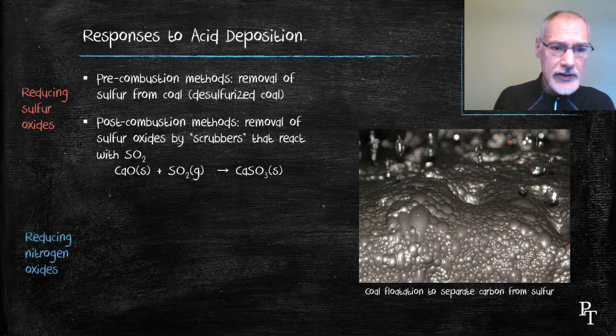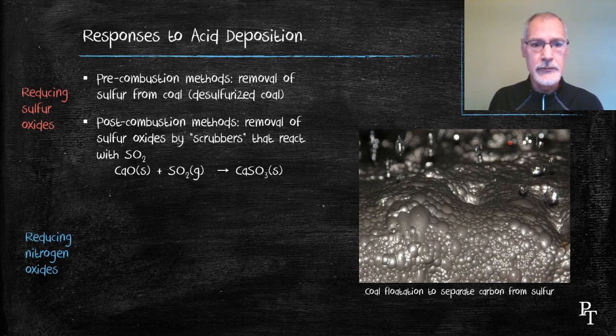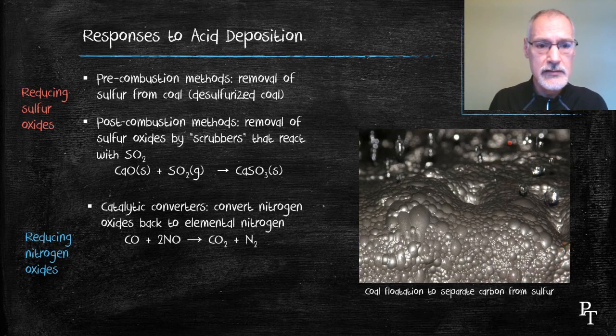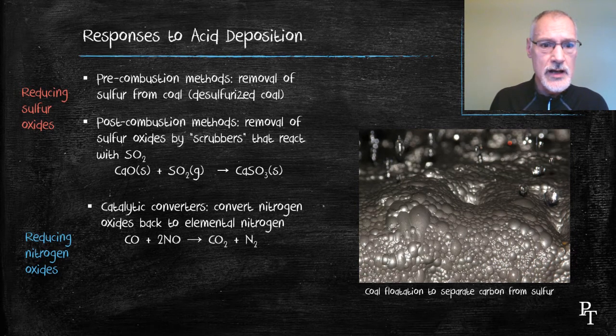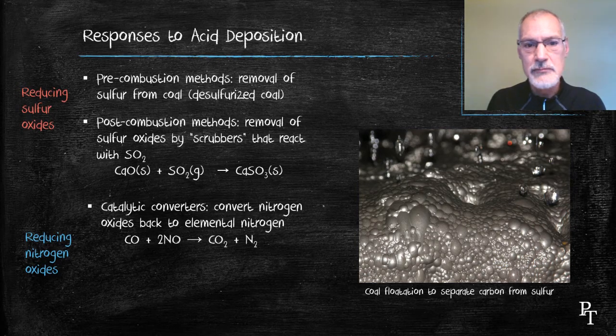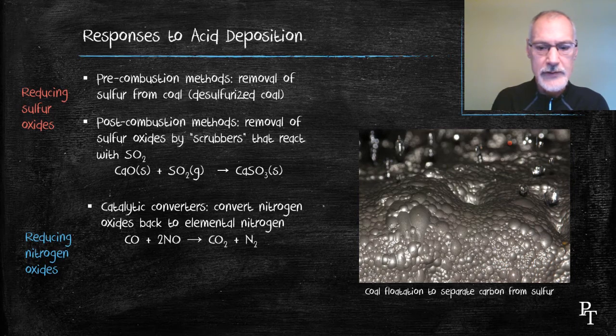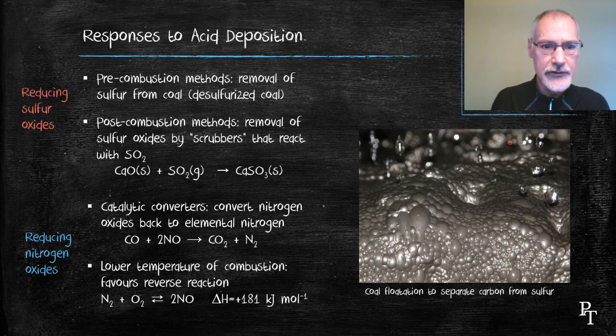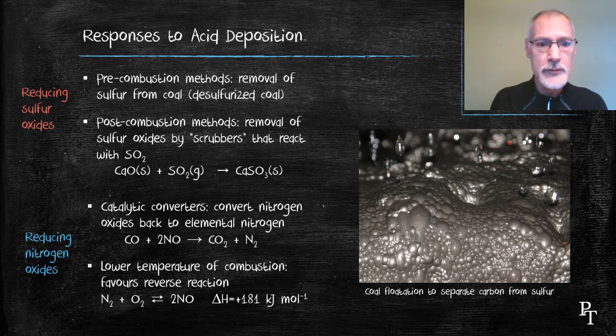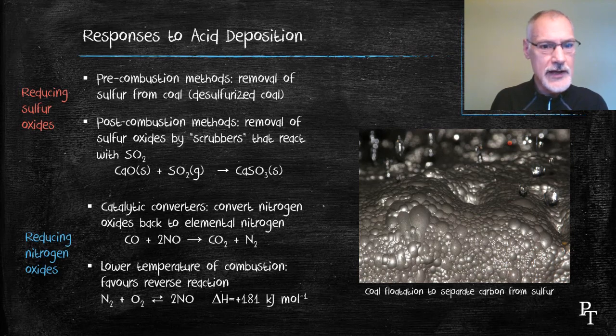To reduce nitrogen oxide emissions, one of the things we've responded with is the use of the catalytic converter, which can take carbon monoxide and nitrogen oxide and turn it back into elemental nitrogen, thereby removing that component from our acid rain. If we can combust at lower temperatures, we can reduce the production of nitrogen oxide. We can see here from this reaction that the reaction is an endothermic reaction. So the addition of heat drives the reaction forward. If I reduce the heat, I drive the reaction in reverse.